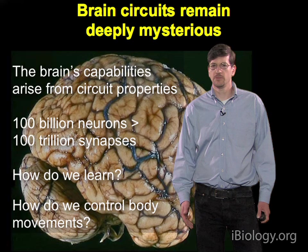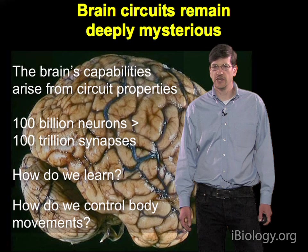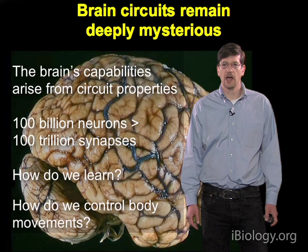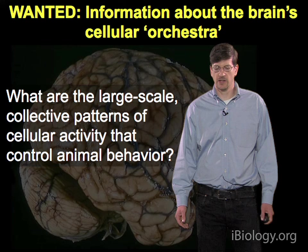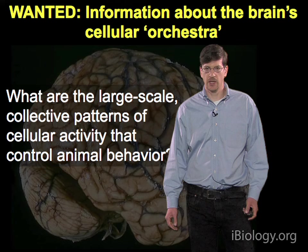These numbers pose some severe challenges. Nonetheless, we have to develop approaches towards understanding how we learn, and as I'll talk about in this lecture, how we control our body movements. One of the things badly missing in neuroscience is information about what I'll call the brain's cellular orchestra — the large-scale dynamic patterns of activity across large populations of individual cells, and how these dynamic patterns influence animal behavior.